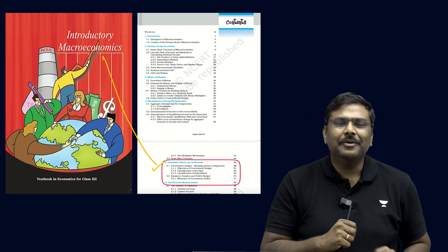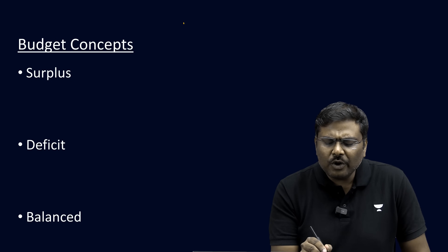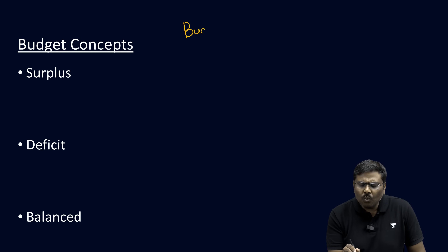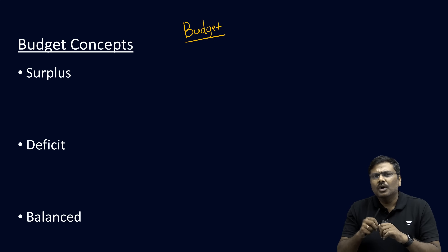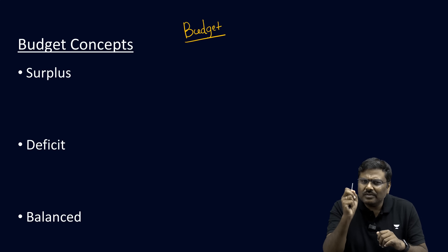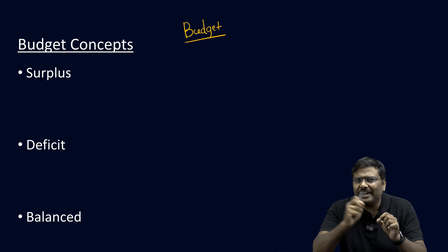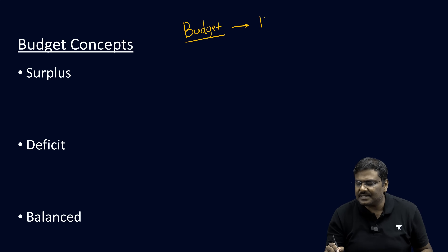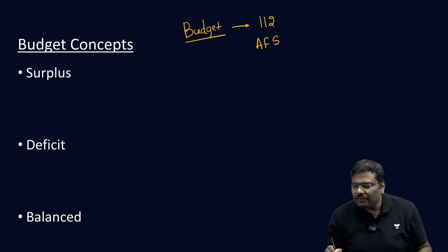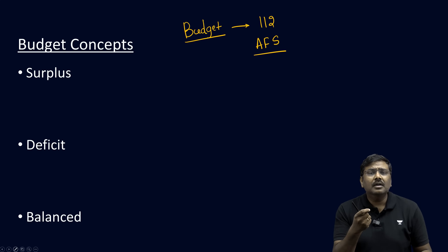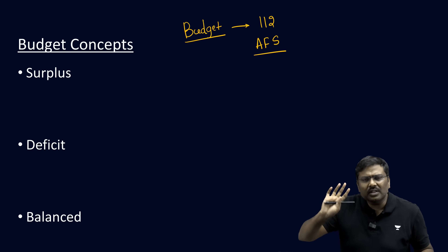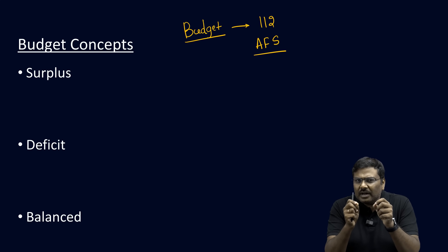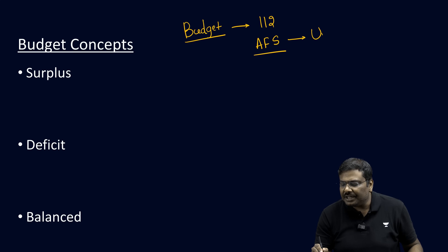Point number 1: whenever you come across the term 'budget,' what does it actually mean? The term budget is not mentioned in the Constitution of India. What is mentioned under Article 112 is the Annual Financial Statement (AFS). Under this concept, mandated by the constitution to be presented on the floor of the house, the Government of India presents the Union Budget.